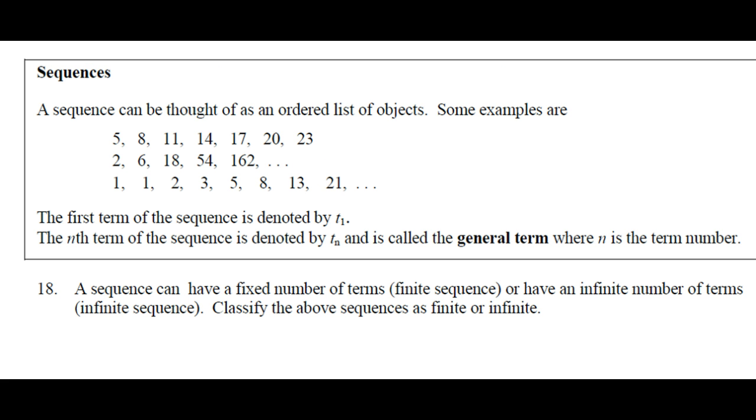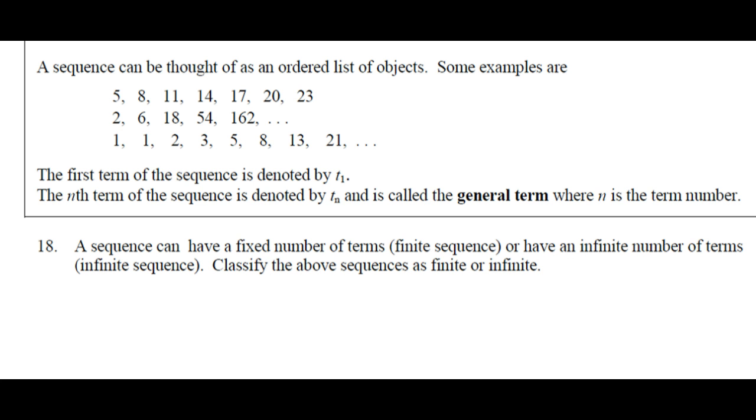Sequences. A sequence can be thought of as an ordered list of objects. Some examples are 5, 8, 11, 14, 17, 20, 23, 26; 18, 54, 16, 21, 12, 35; 8, 13, 21. Anybody know what that sequence is called? Famous sequence. Fibonacci sequence. Named after? Fibonacci. Also known as Leonardo of Pisa. Go Google it. It's a very interesting sequence. How did this guy come up with that? Rabbits, that's how. Rabbits. Seriously. Rabbits.